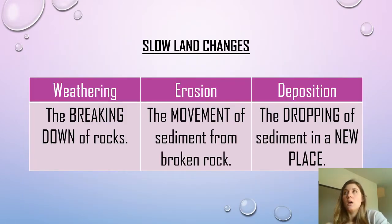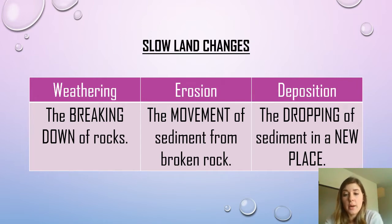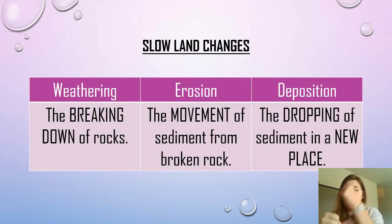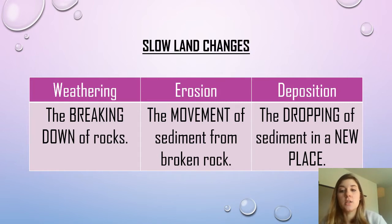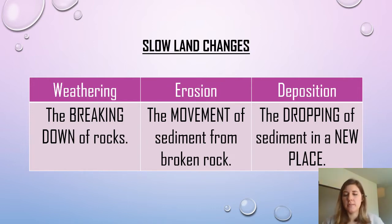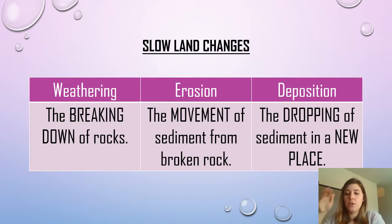Slow land changes take a long time, and we break them into weathering, erosion, and deposition. These all go hand in hand, so it can be confusing. Weathering is the breaking down of rocks. Erosion is the movement of sediment — the pieces of rock that break off. And deposition is the dropping of sediment in a new place. So: weathering breaks the rock, erosion moves the pieces that got broken off, and deposition puts it in a new place. Until sediment has been dropped in a new place, it's not deposition.